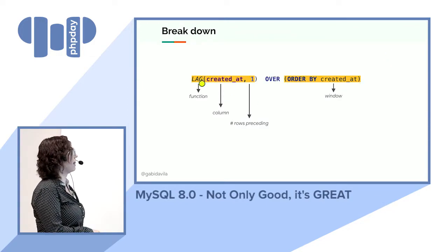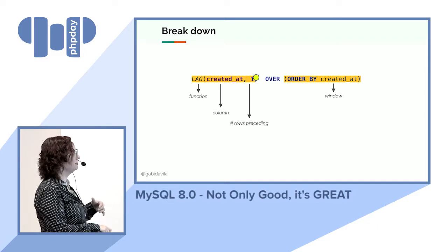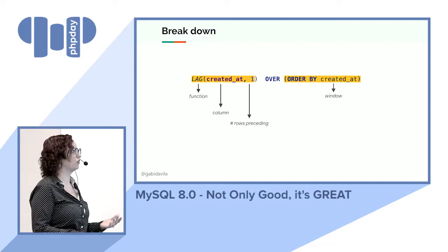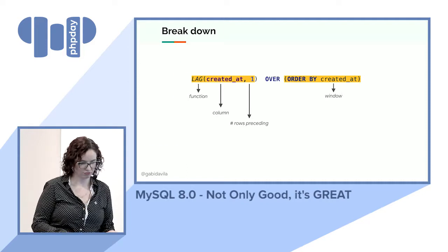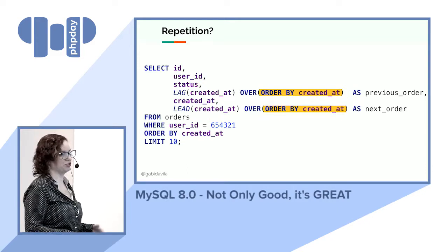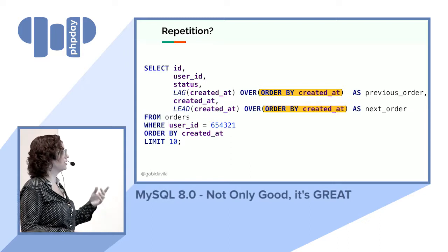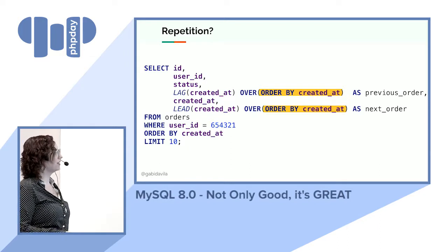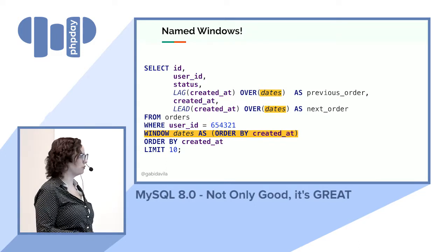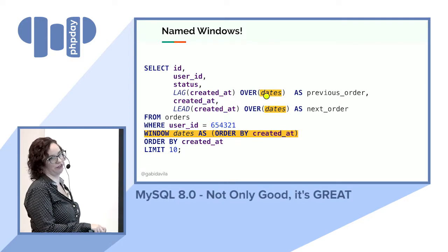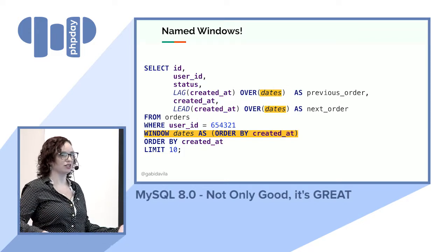The syntax for LAG is: LAG(column, number_of_rows_back) OVER (window_definition). By default, the offset is 1 if omitted. You specify which window — which perspective — you're looking at, for example OVER (ORDER BY created_at). To avoid repeating the window definition, you can name your windows: define a window with a name and reference it throughout the query. If you change the window definition, you only update it in one place. For complex analytical queries, this saves a lot of time.